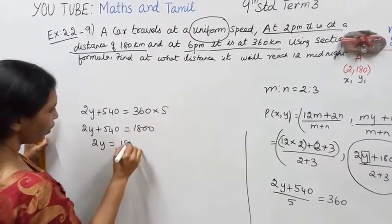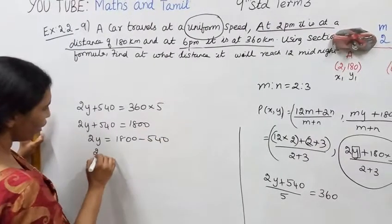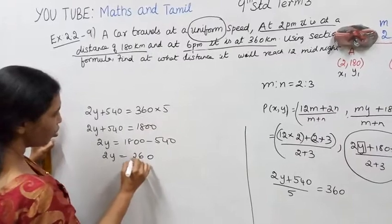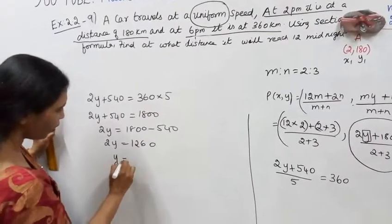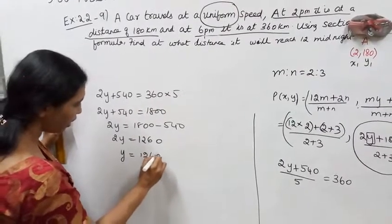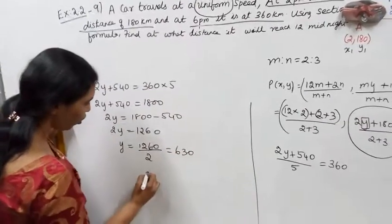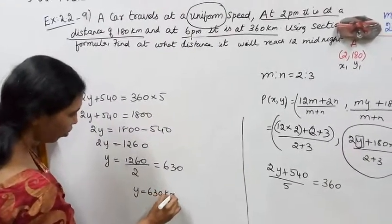Y equals 1260 divided by 2. Y equals 630 kilometers.